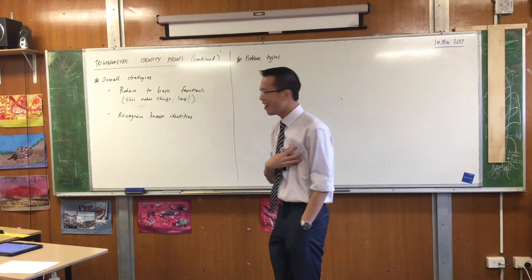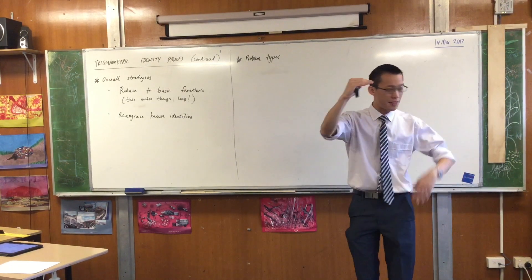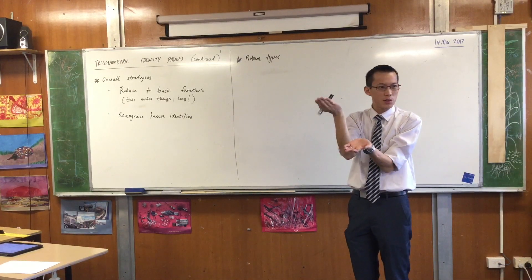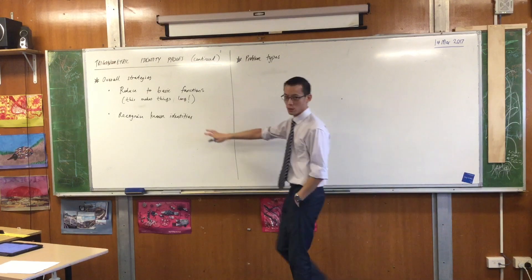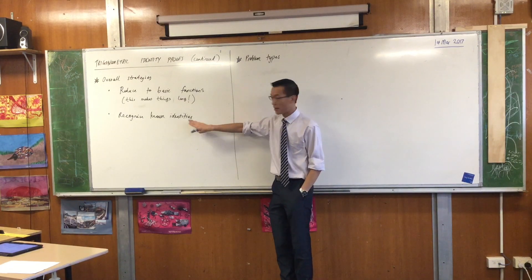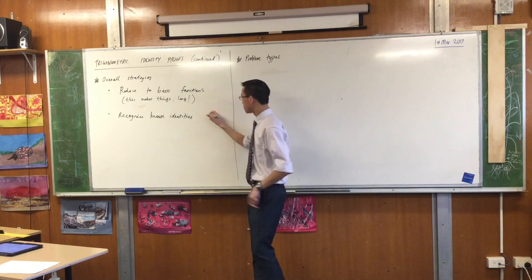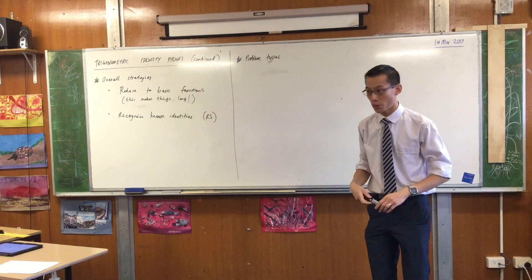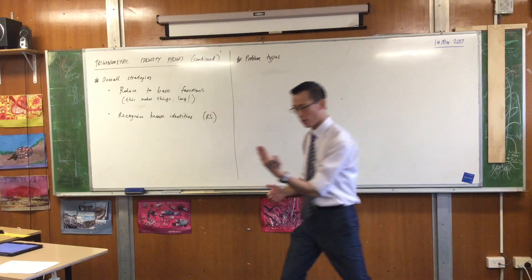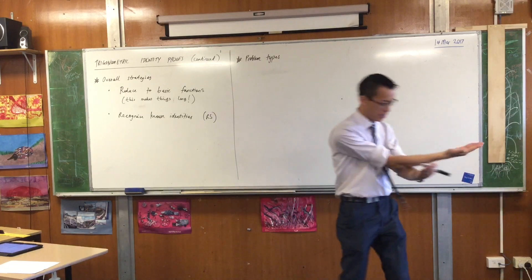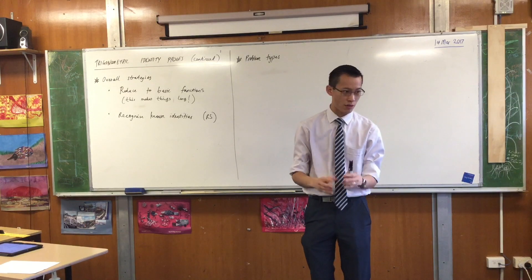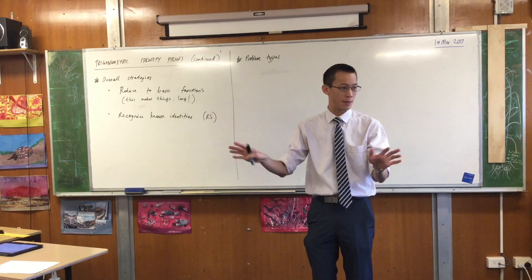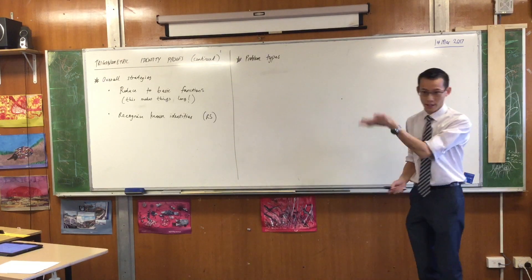Sometimes you do one identity and the next one looks totally different, and you think: what use was that? But the point is the more you use these, the more they will form into your memory. The reference sheet has a lot of the identities that you will need, but if you are constantly looking at a question and then looking at the reference sheet and back and forth, you will really struggle to recognise the pieces you need because your brain is in too many places at once. So: recognise the known identities.